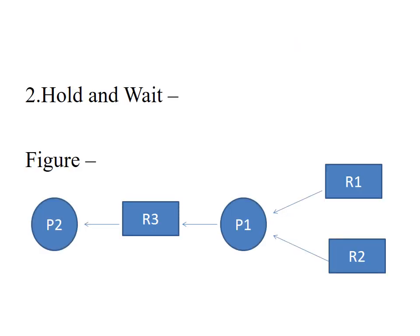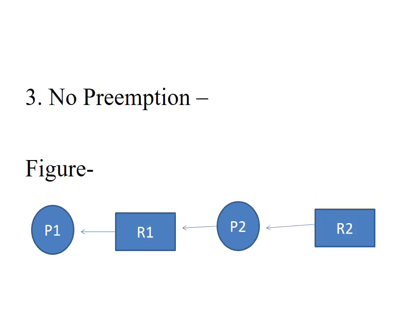The next state of deadlock characterization is hold and wait. A process can hold multiple resources and still be requesting more resources from other processes which are holding them. In the figure, process 1 allocates resource 1 and resource 2, meaning process P1 already holds two resources and is still requesting a third resource R3, which is already held by other process P2. This is called the hold and wait condition.